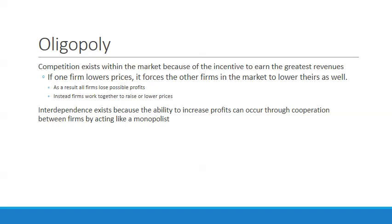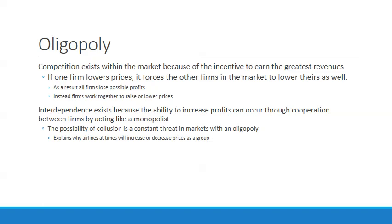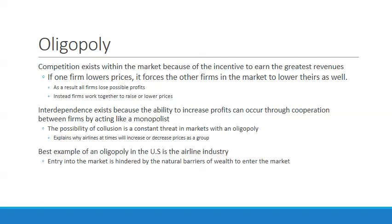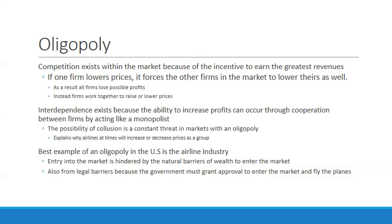Interdependence exists because profits can increase through cooperation between firms by acting like a monopolist. The possibility of collusion is a constant threat in oligopoly markets — if firms act together to raise prices, that's collusion, and it's illegal. Entry into the market is hindered by natural barriers of wealth (consider how much money it costs to start an airline) and legal barriers requiring government approval. As a result, very few companies control the market and at times work together to increase profits.